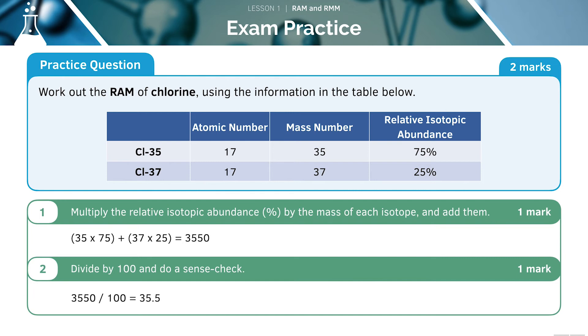We can do a sense check to make sure that the value seems right. 35.5 is in between 35 and 37, as we would expect, and it has a closer mass to Cl-35, which is a more abundant isotope. Therefore, this answer seems fine.